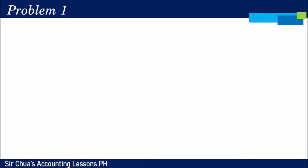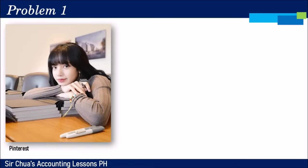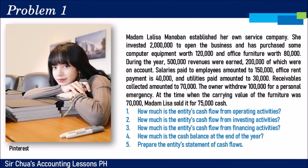Let's start with Problem 1. Madam Lalisa Manoban established her own service company. She invested $2,000,000 to open the business and purchased computer equipment worth $120,000 and office furniture worth $80,000. During the year, $500,000 in revenues were earned, $200,000 of which were on account. Salaries paid amounted to $150,000, office rent $40,000, and utilities $30,000. Receivables collected amounted to $70,000. The owner withdrew $100,000 for a personal emergency. When the carrying value of the furniture was $70,000, Madam Lisa sold it for $75,000 cash. We need to compute cash flows from operating, investing, and financing activities and the ending cash balance.